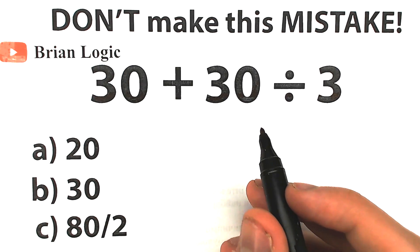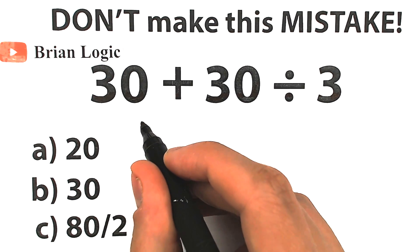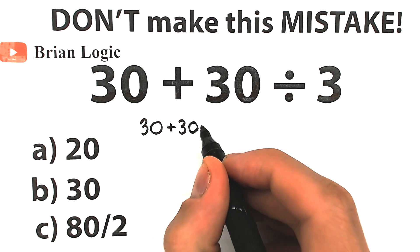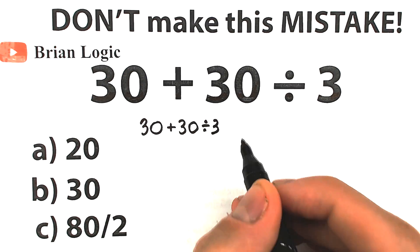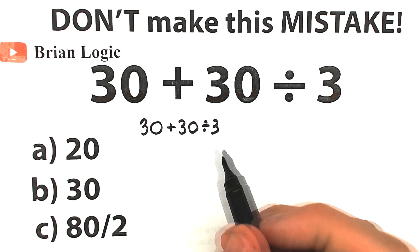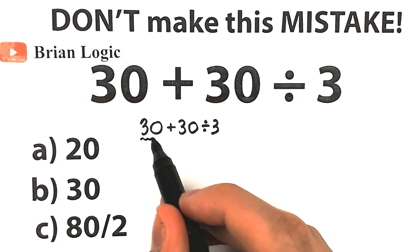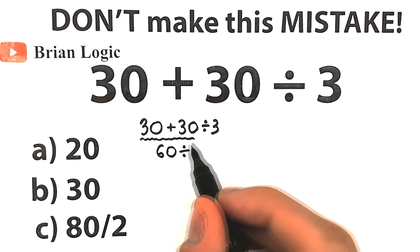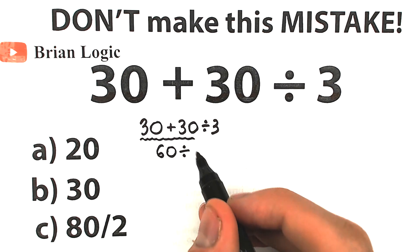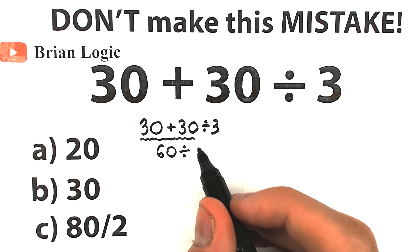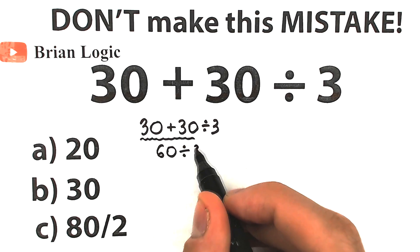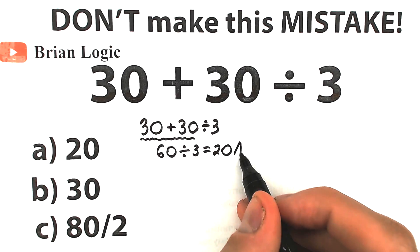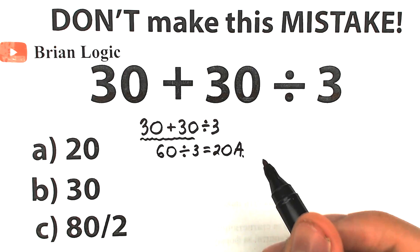So there are two types of people. I want to start with this explanation. As you can see, our question — I just wanted to rewrite it — we have 30 plus 30 divided by 3. One group of people solve this question from left to right: 30 plus 30 equals 60, then divided by 3. They don't know about order of operations, so they get 60 divided by 3 equals 20. This is Option A.